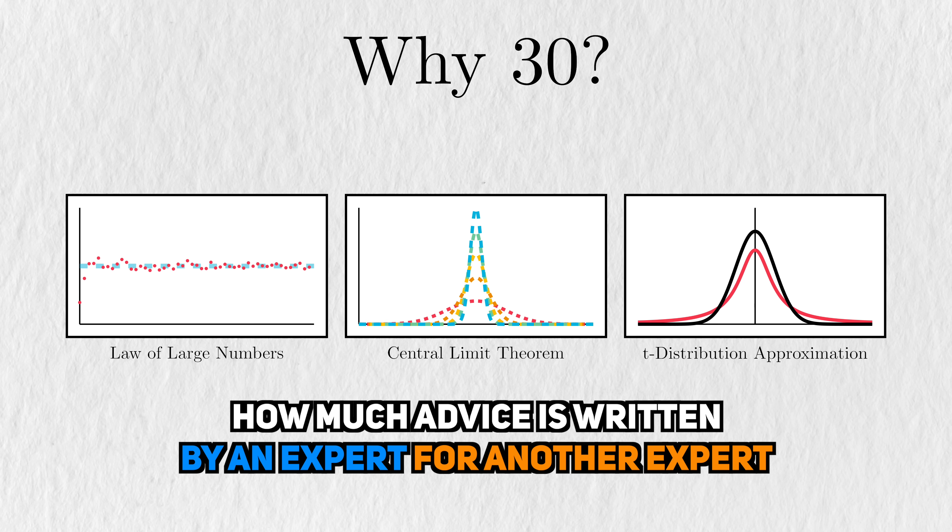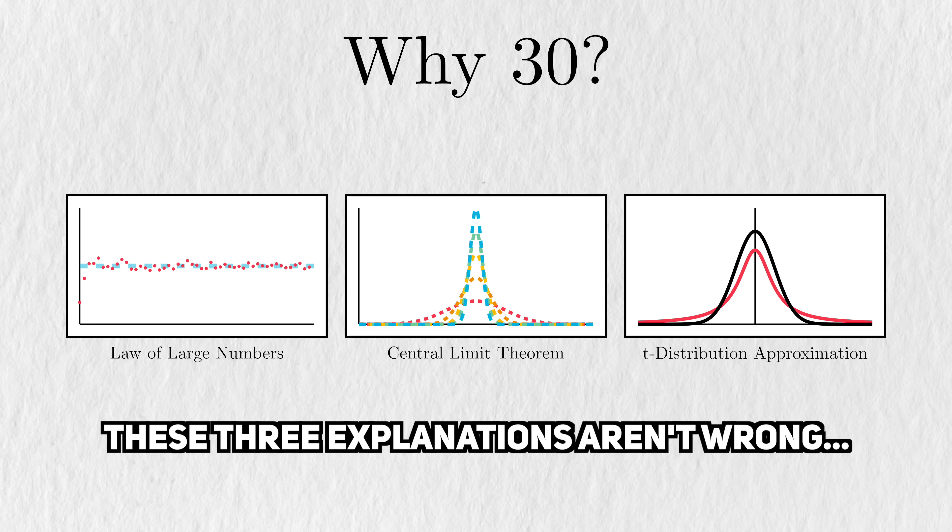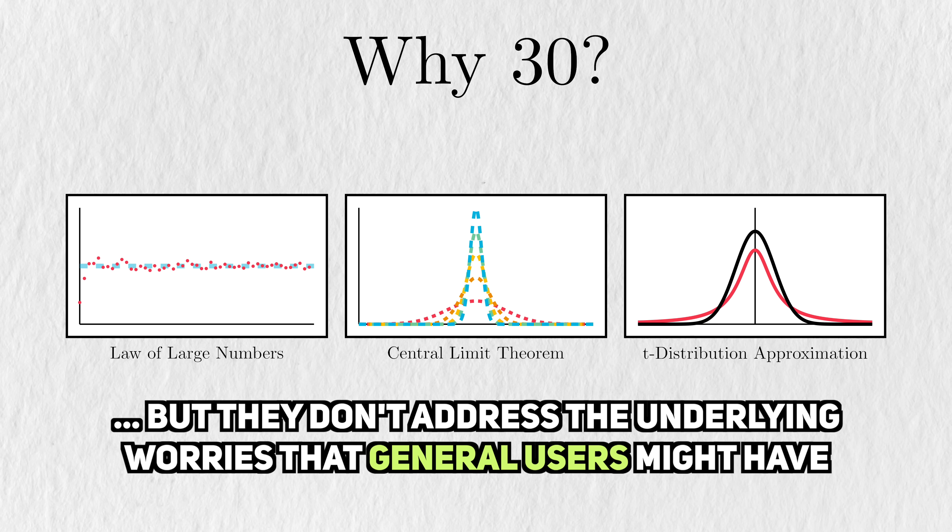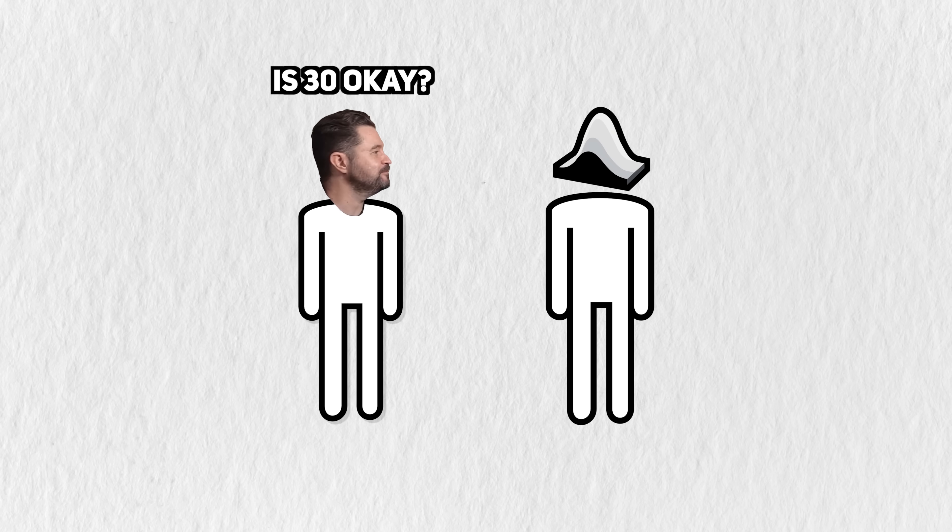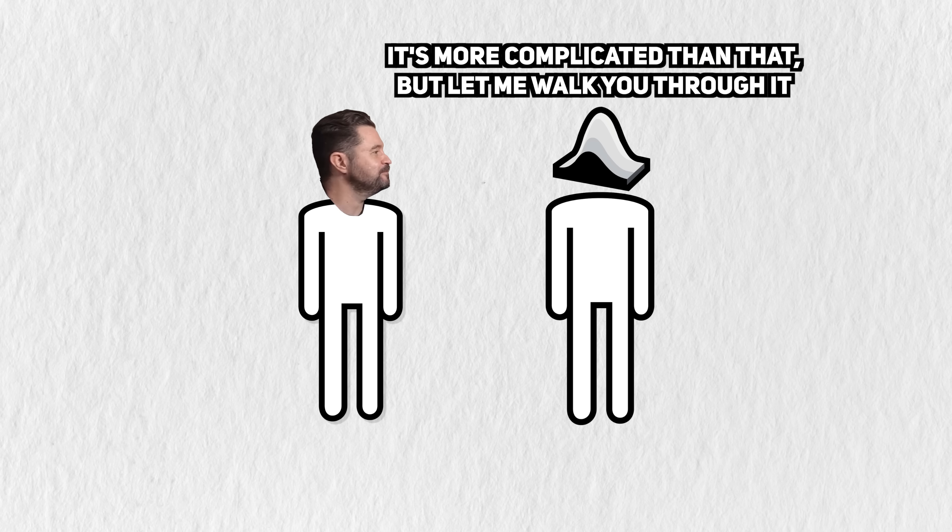What really jumped out to me as I was researching this video was how much advice was written by an expert for another expert. These three explanations aren't wrong, but they don't really address the underlying problem that users are worried about. To be really effective as a statistician, you need to adapt your explanations to your audience. Your team will appreciate it, and you won't have to hear about the number 30 anymore.